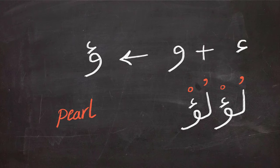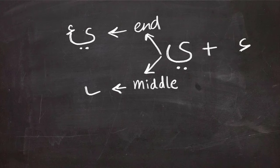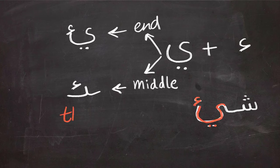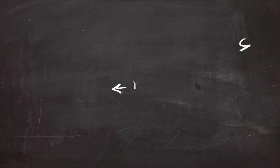In another combination, we can also add Hamza to ya, and this gives us two different situations. If it comes at the end of the word, it's going to look like that. And if it comes in the middle of the word, the Hamza will be on the ya and will look like that. For example, if it comes at the end in the word shay, and shay means thing. And if it comes in the middle, it will be like that, like thi'b, which means wolf.